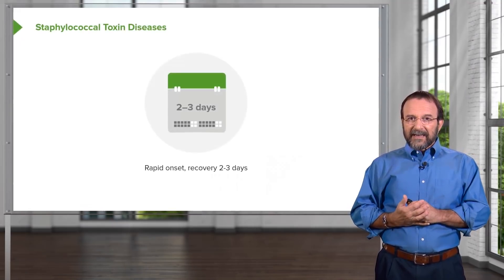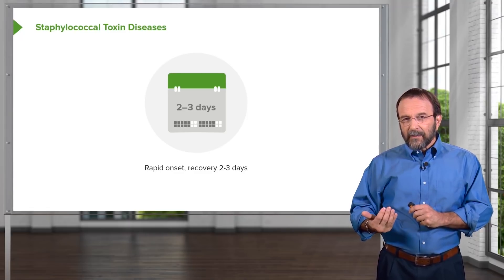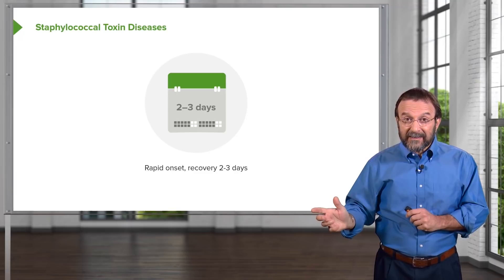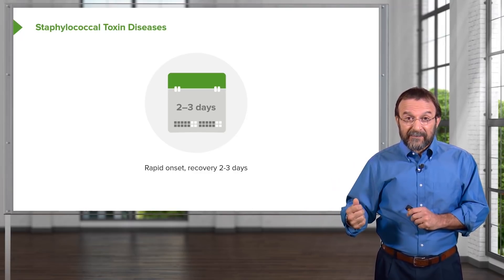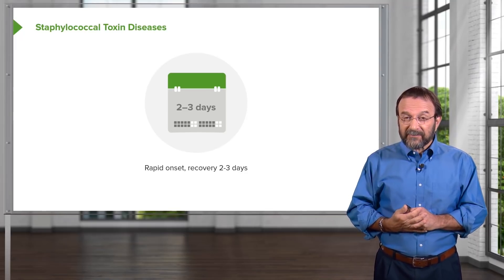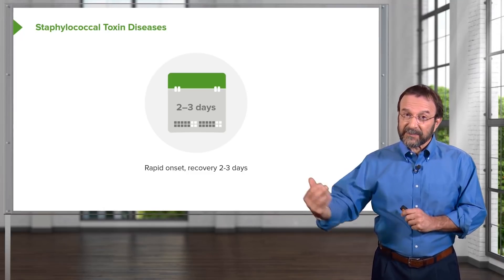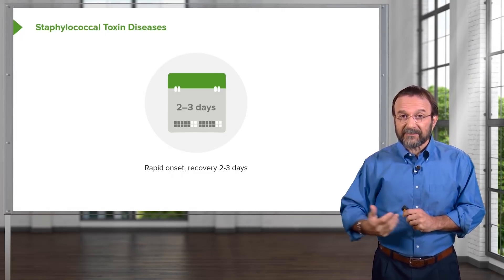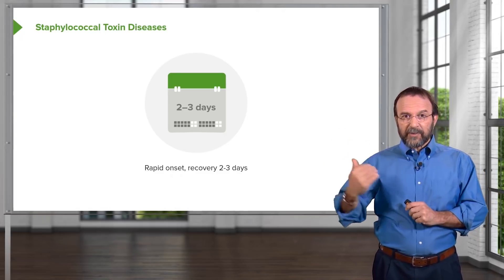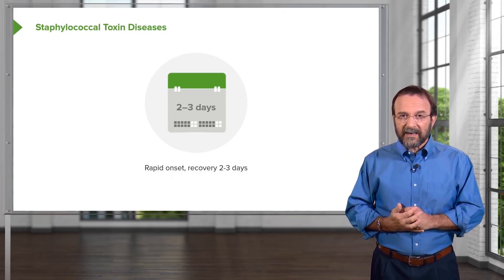This disease has a typically rapid onset. If you eat something and an hour or two later you're vomiting, that could be Staph aureus toxin-caused food poisoning. In contrast, if it takes a few days to get sick, that means the bacteria have to replicate in you first. This is a rapid-onset food poisoning caused by staphylococci, and in two or three days, you recover.